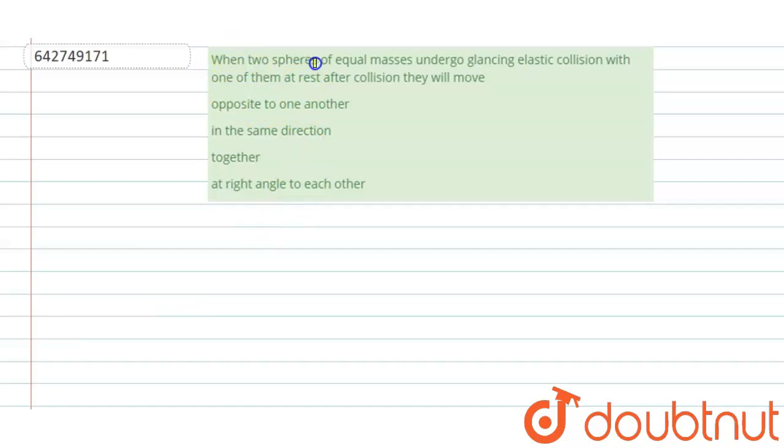When two spheres of equal masses undergo an elastic collision with one of them at rest, after collision they will move how? Opposite to one another, in the same direction, together, or at right angles to each other? From derivation: